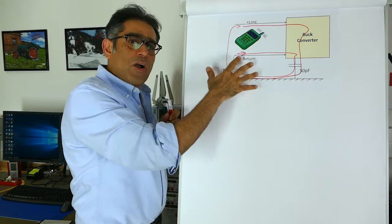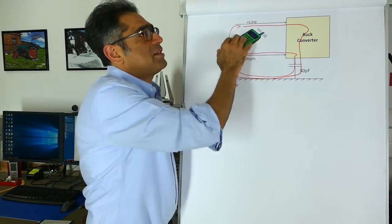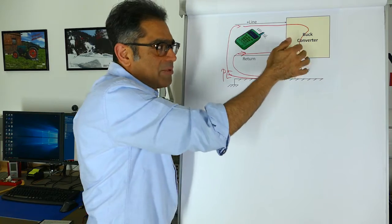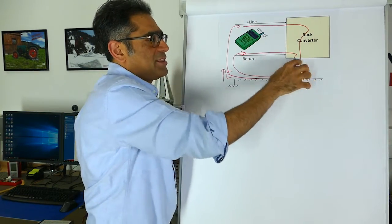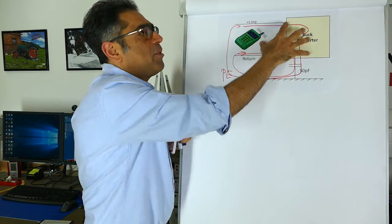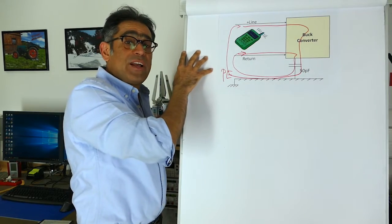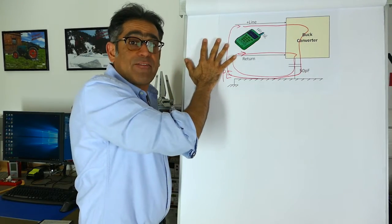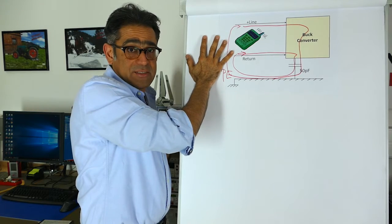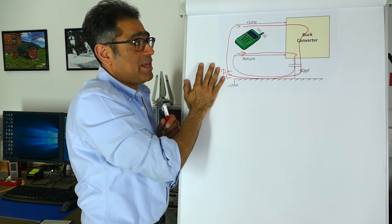And these are common mode currents—the currents that couple via some capacitance between the body and the chassis and then return. The problem with these is that this loop is actually much larger, and therefore you may have conducted emissions test failures when you go to the EMC test chamber.